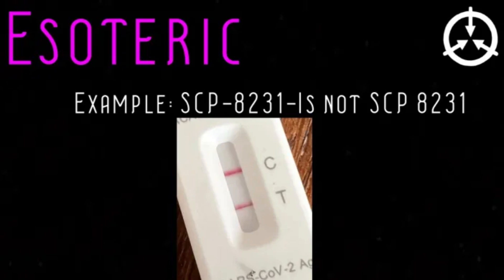Additional object classes that are not listed are generally created to house exactly one SCP that does not fit cleanly into any other type of object class. Esoteric object classes are often only assigned to one SCP and are created specifically for that SCP.